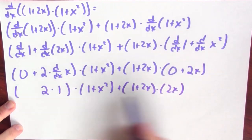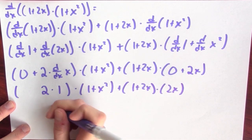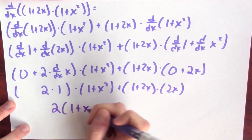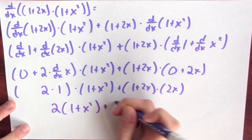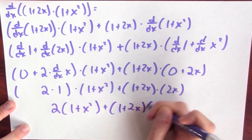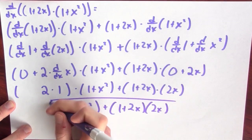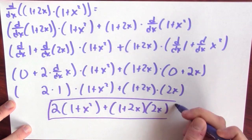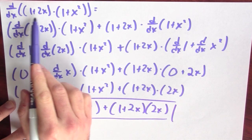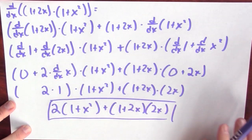So there it is. Written a little more neatly: 2(1 + x²) + (1 + 2x)(2x). This is the derivative of our original function, (1 + 2x)(1 + x²).